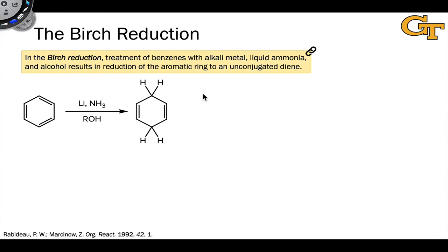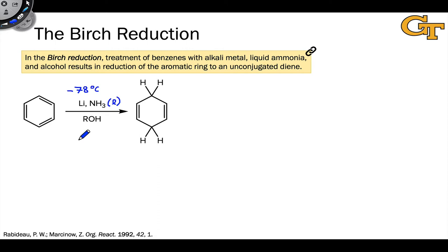Here's a general scheme for the reaction that uses benzene as the substrate. The reaction mixture combines two or three components, typically at very low temperature — something like negative 78°C. This is sometimes supplied in the reaction scheme, sometimes not. Because of the low temperature, the ammonia used here is actually in liquid form. One component is liquid ammonia, and the other component is an elemental alkali metal — lithium or sodium are the two most commonly used — in the zero oxidation state. These are extremely reactive elemental alkali metals, and they're extremely reactive as reducing agents. This strong reducing power essentially powers the reduction reaction.